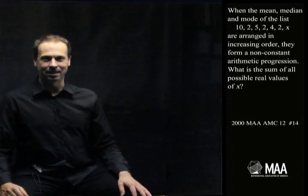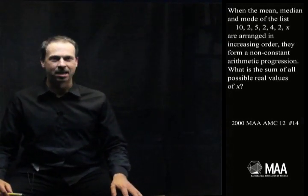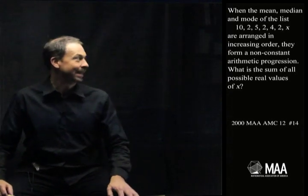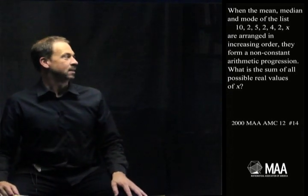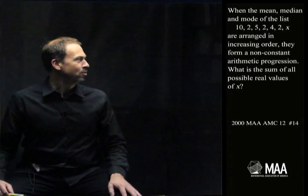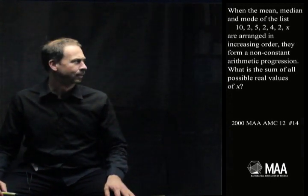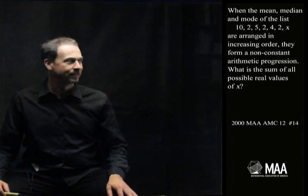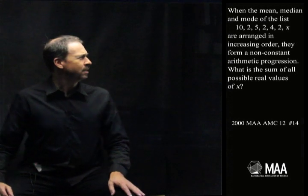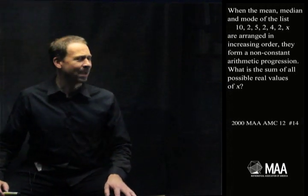The mean, median, and mode of the list 10, 2, 5, 2, 4, 2, and x are arranged in increasing order. They form a non-constant arithmetic progression. I'm going to take a moment to process that. What is the sum of all the possible real values of x?